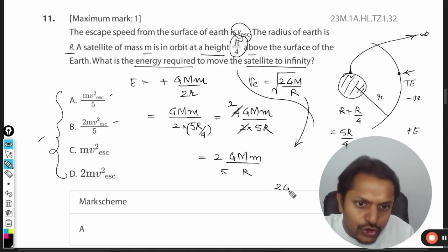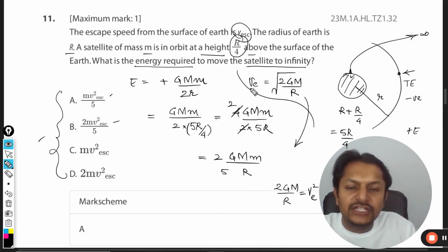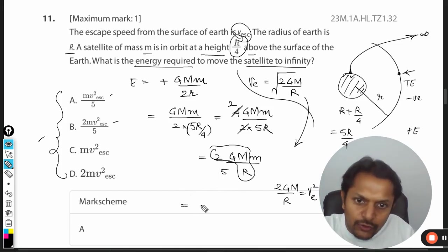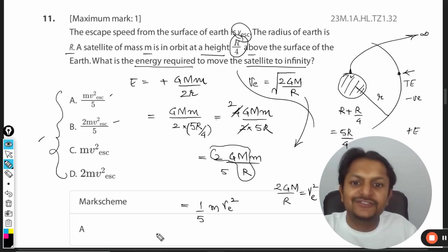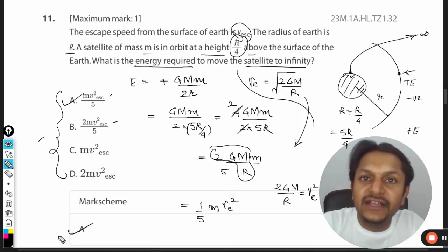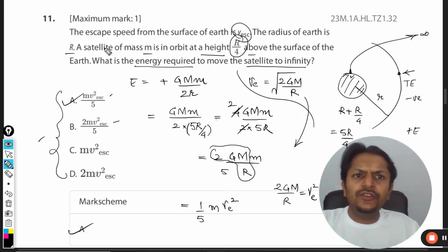2GM/R equals v_e², so we can write E = (m × v_e²)/5. Therefore, E = mv_e²/5, and A is the correct answer.